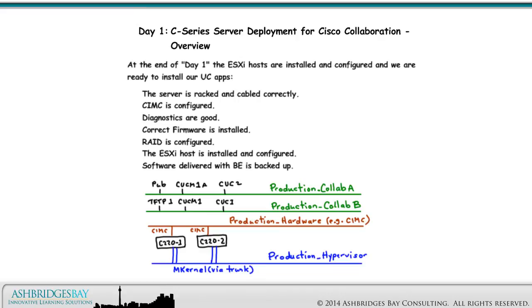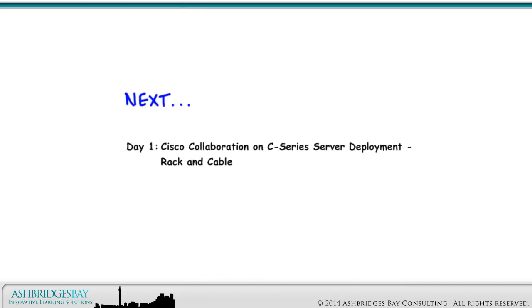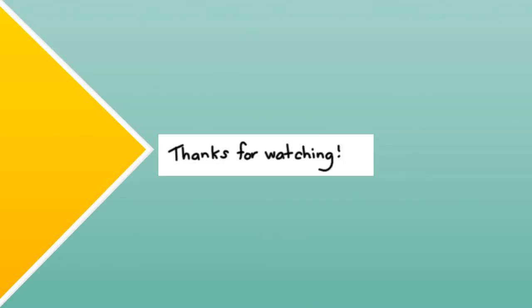At the end of day one, the ESXi hosts are installed and configured, and we are ready to install our UC apps. The server is racked and cabled correctly, CIMC is configured, diagnostics are good, correct firmware is installed, RAID is configured, the ESXi host is installed and configured, and software delivered with BE is backed up. Coming up next: Day 1 Cisco Collaboration on C-Series Server Deployment — Rack and Cable. Thanks for watching!